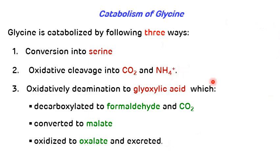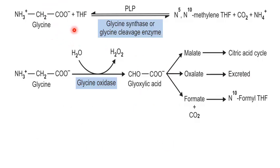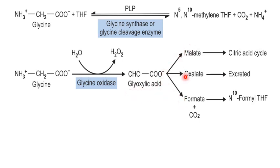In detail: glycine, in the presence of tetrahydrofolate and the enzyme glycine synthase (glycine cleavage system), transfers its methylene group to THF, with removal of CO2 and NH4+, producing N5,N10-methylene tetrahydrofolate. Separately, glycine can be oxidatively deaminated by glycine oxidase to glyoxalic acid. Glyoxalic acid can then be converted to malate (entering the citric acid cycle), oxidized to oxalate (excreted), or oxidatively decarboxylated to formyl, yielding N10-formyl tetrahydrofolate.